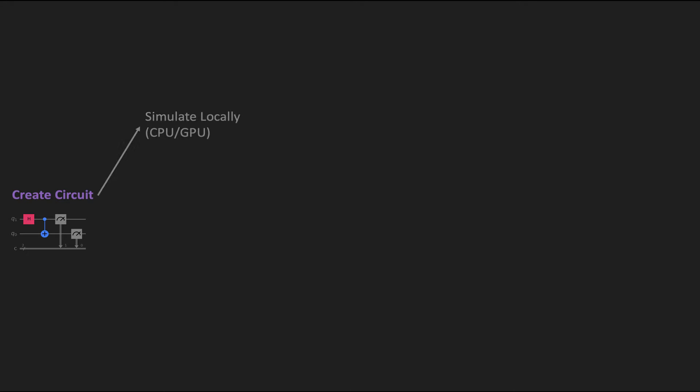So here's the idea of what I plan to cover. In a typical workflow, we first start by generating a circuit, and then we decide if we want to either simulate that circuit locally or execute it on a real quantum processor. In the past, there was also a way to simulate things on the cloud, but that service is going away, so now we're only left with these two choices. Usually we want to first run a simulation, maybe of a smaller version of our circuit, and then run it on hardware.